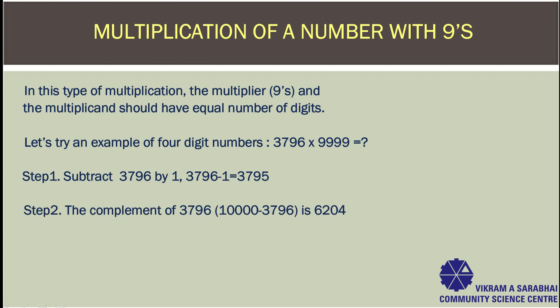Step 2: The complement of 3796 is 6204. Now, place the product of Step 1 — that is 3795 — in the beginning, and the product of Step 2 — that is 6204 — at the end.